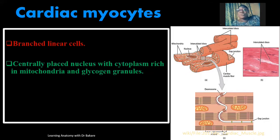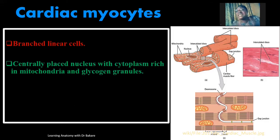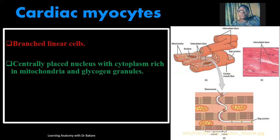The cardiac muscles undergo continuous contraction and relaxation in order to pump out blood. This action cannot be stopped — it is continuous because the heart needs to continuously pump blood to fill the body cells with oxygen and nutrients. This action requires a lot of energy, so the cytoplasm is filled with a large number of mitochondria to meet the energy demand.